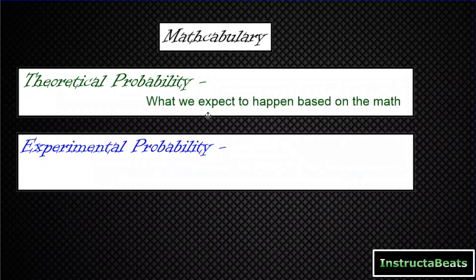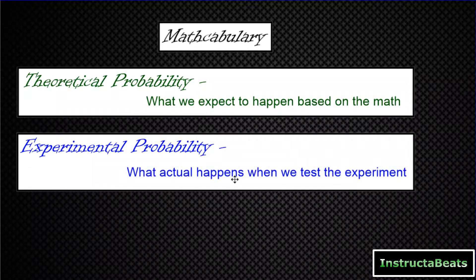Theoretical probability is what we can expect to happen in an experiment based on the math. We talked about throughout those two lessons that that might not actually be what happens. When you flip a coin twice, it's totally possible that you land on heads both times. But based on the math, we're expecting you to land 50% on heads and 50% on tails. In experimental probability, you're talking about what actually happened during the test experiment.